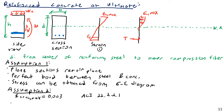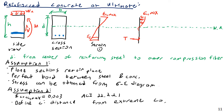I also want to define C. C, D, H, and B are all in the manual. C is the distance from the extreme compression fiber to the neutral axis — this is something you're going to have to calculate.